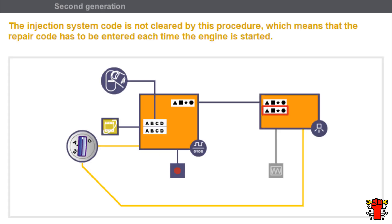While it is possible to start the engine, the injection system code has not been cleared by this procedure. When the ignition is switched off, the immobilizer is reactivated with the automatic start. The repair code must be entered each time before the engine is started.